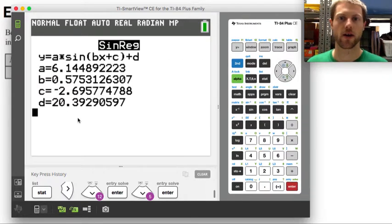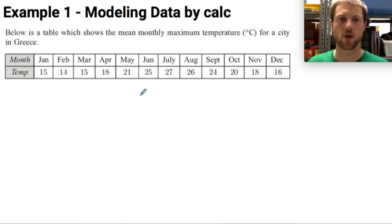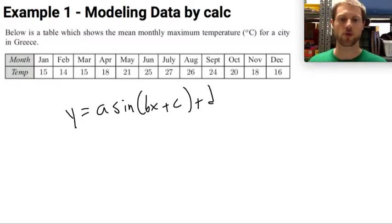And then here is my equation. So I'm going to write this one down. This is Y equals, and now one thing I'm going to write down is that this is in the form A times sine of BX plus C plus D. So this is slightly different than the form that we're used to.